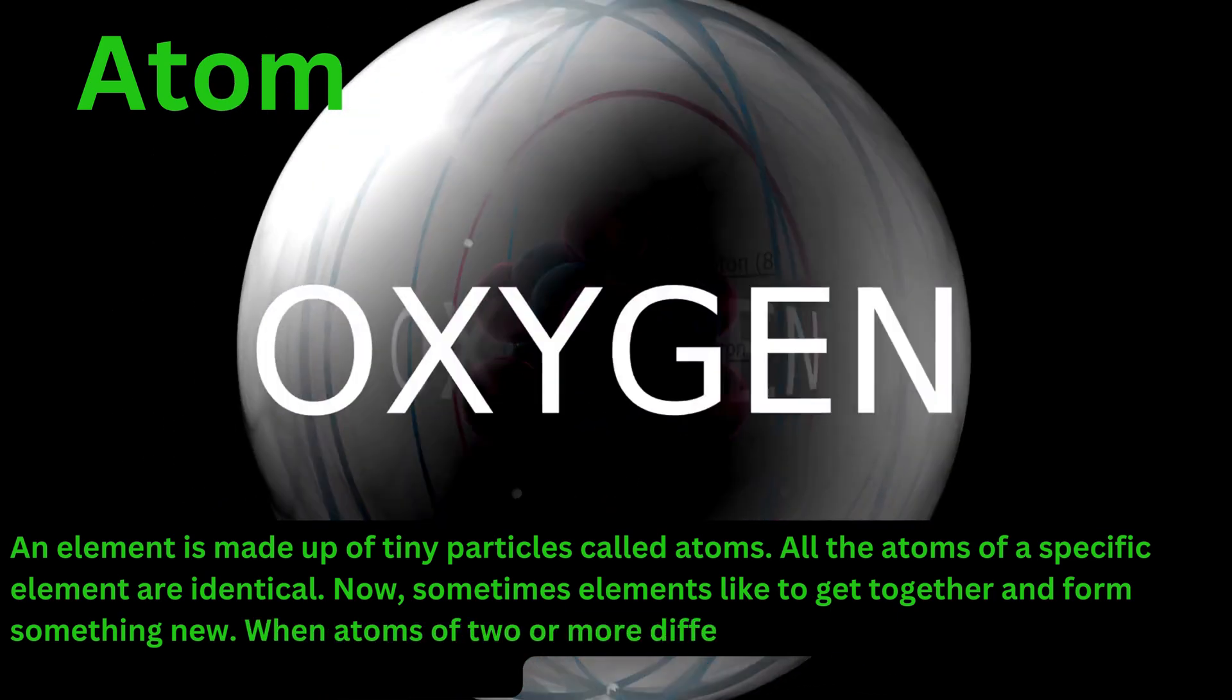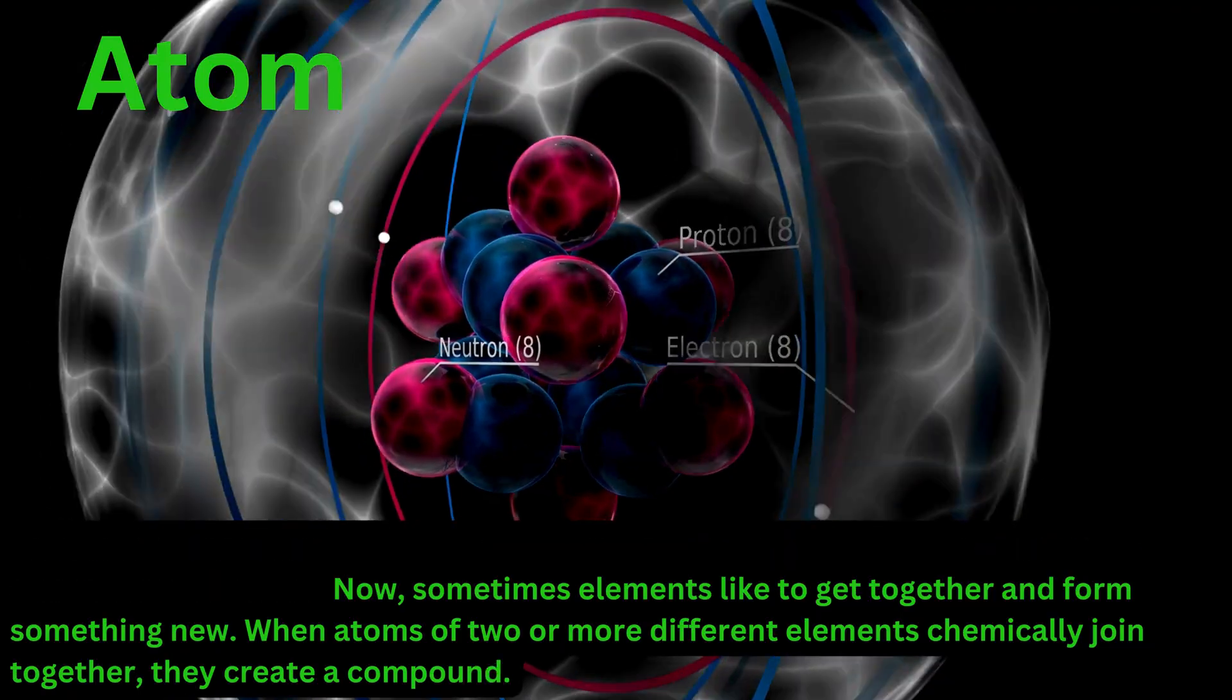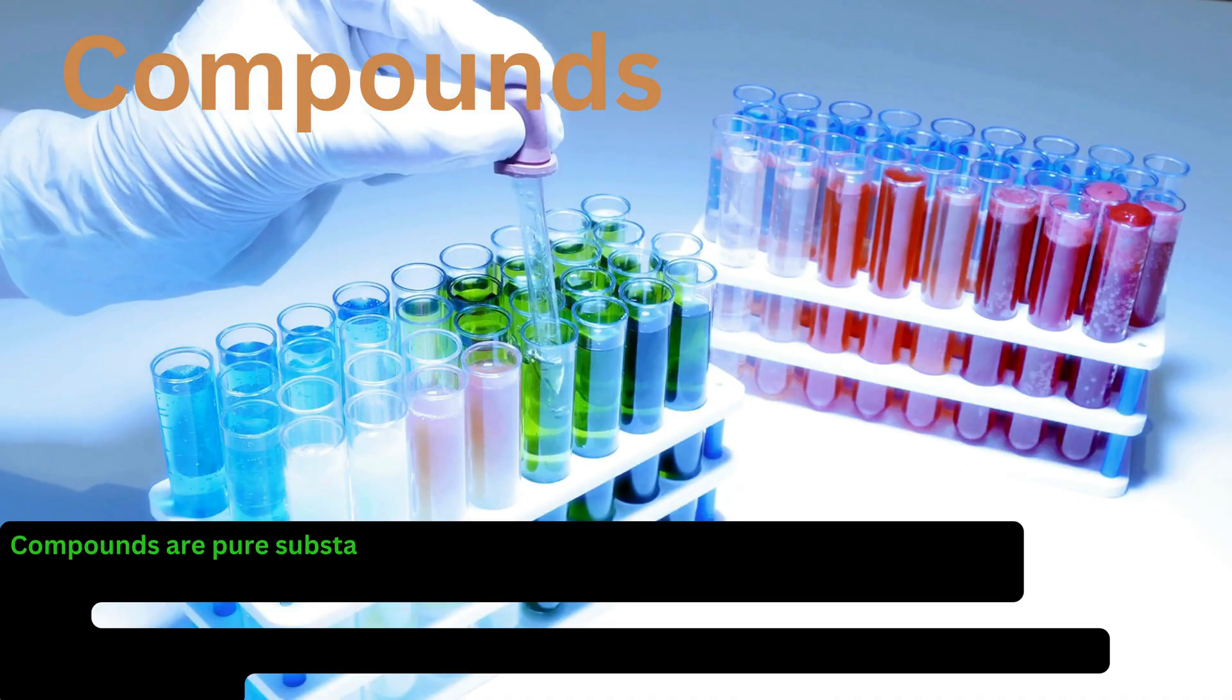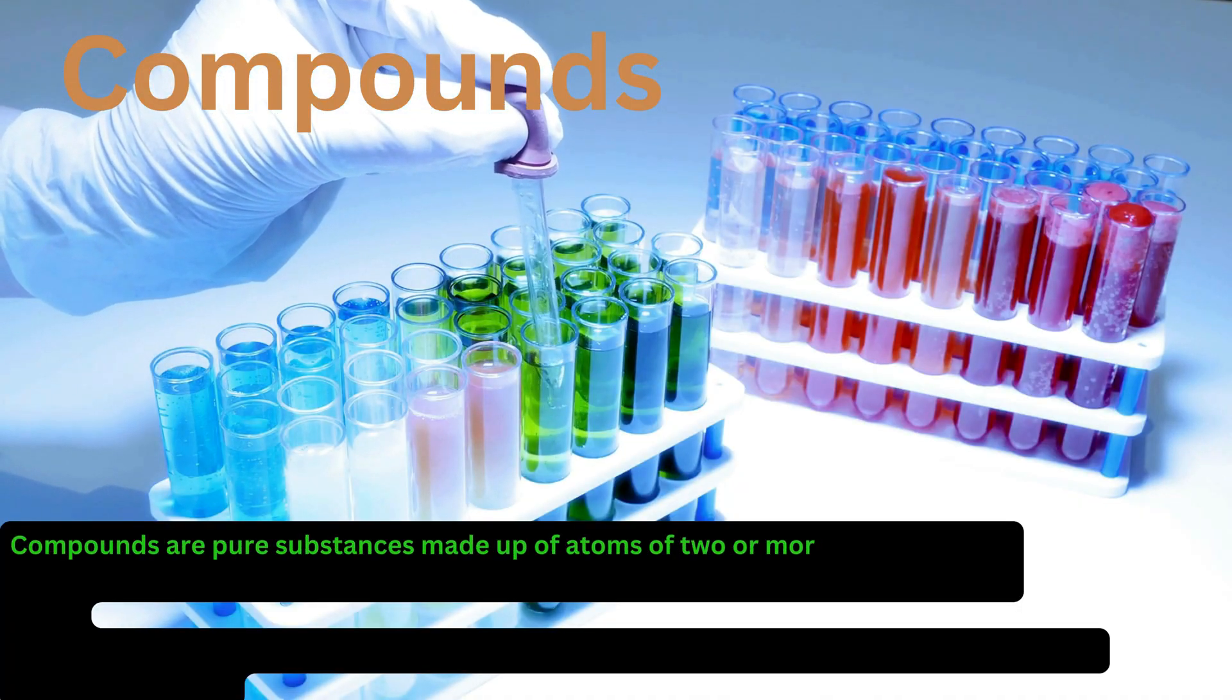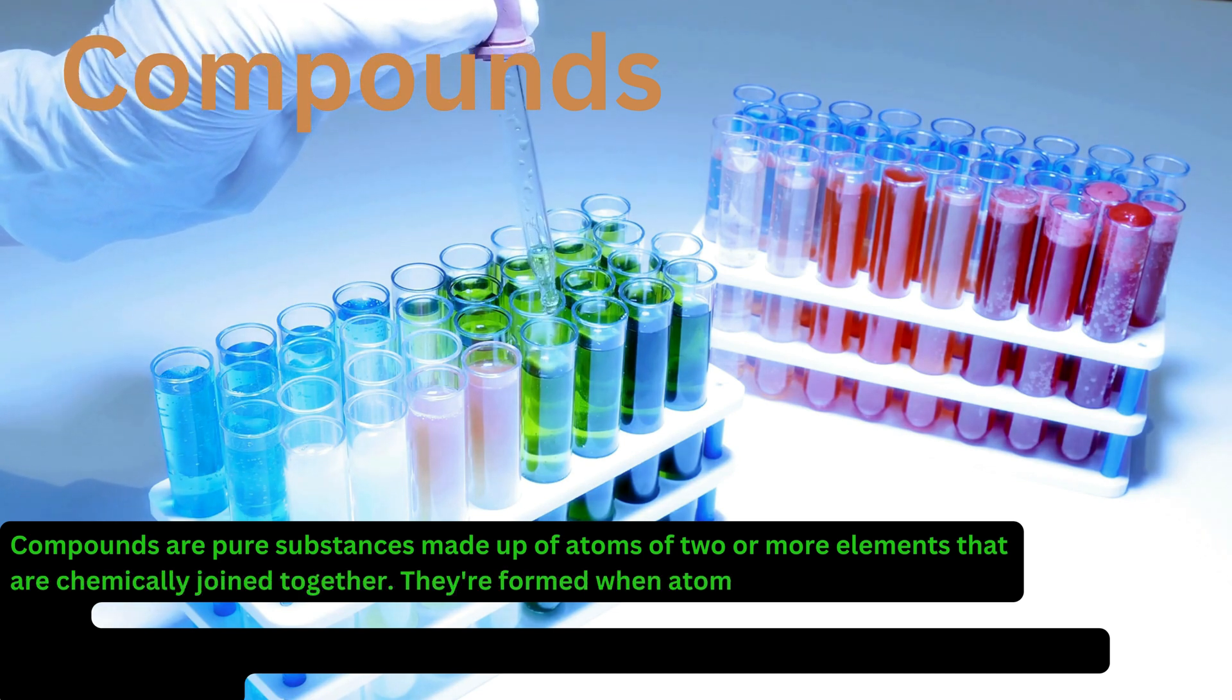When atoms of two or more different elements chemically join together, they create a compound. Compounds are pure substances made up of atoms of two or more elements that are chemically joined together. They're formed when atoms of different elements react.